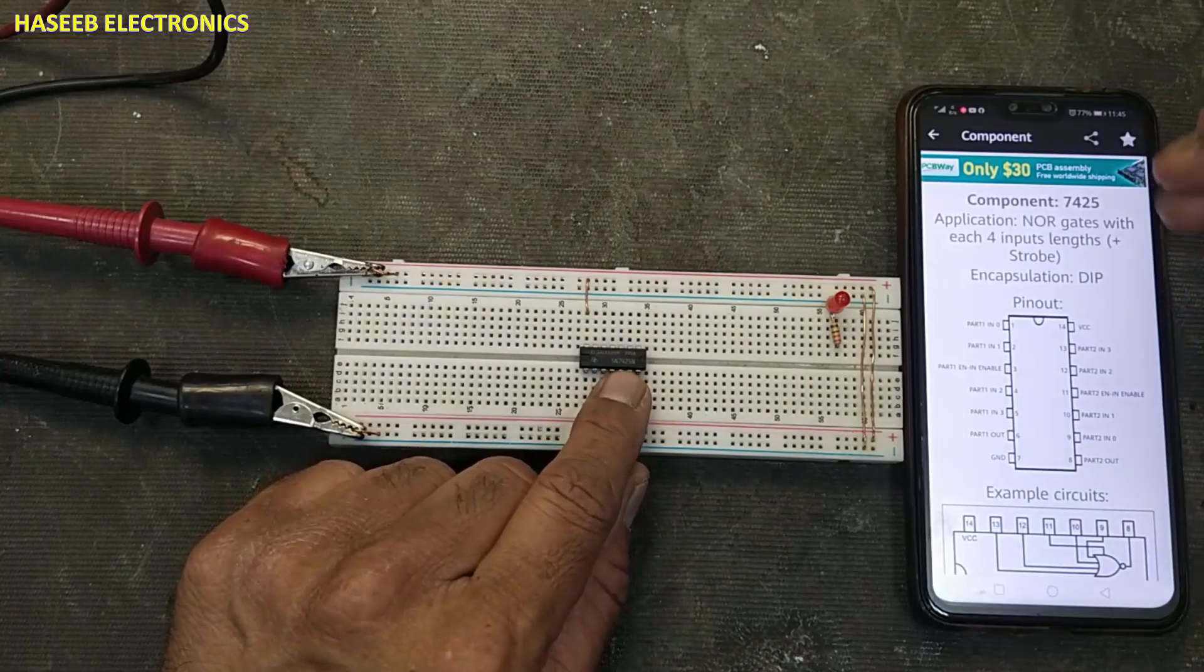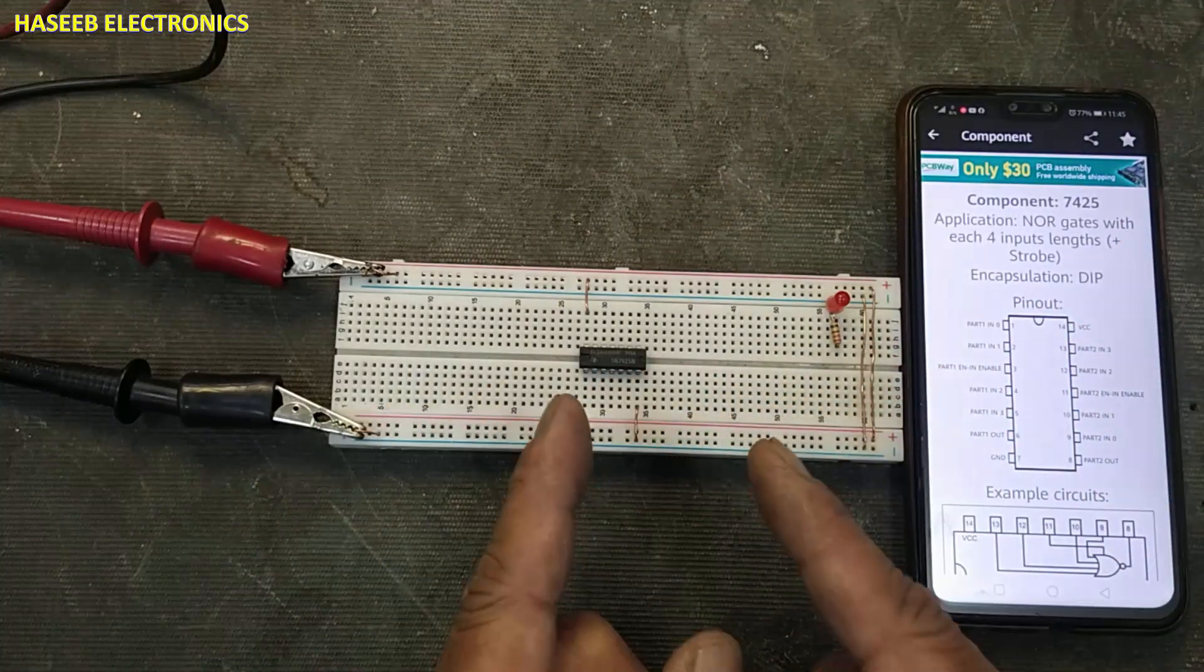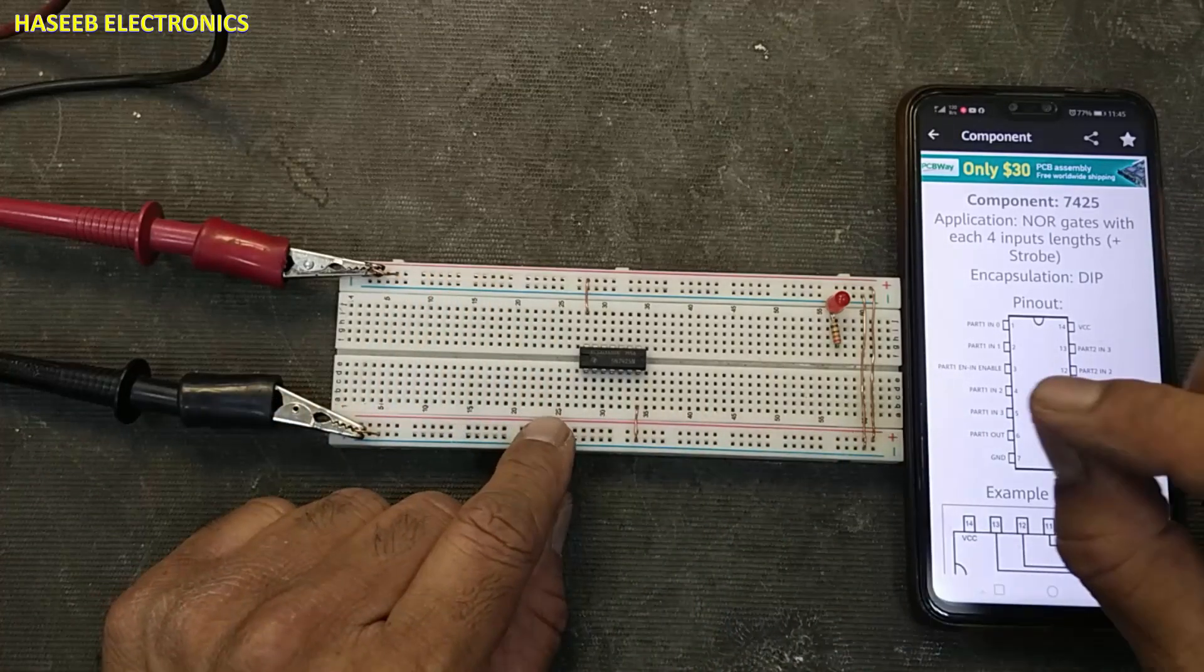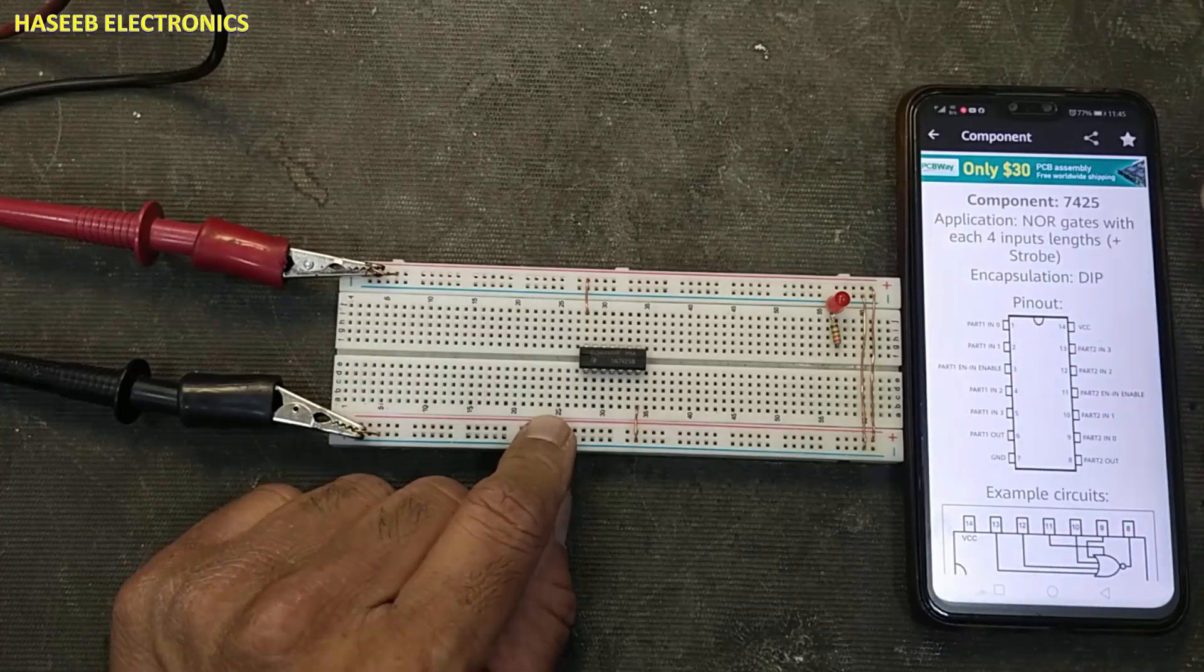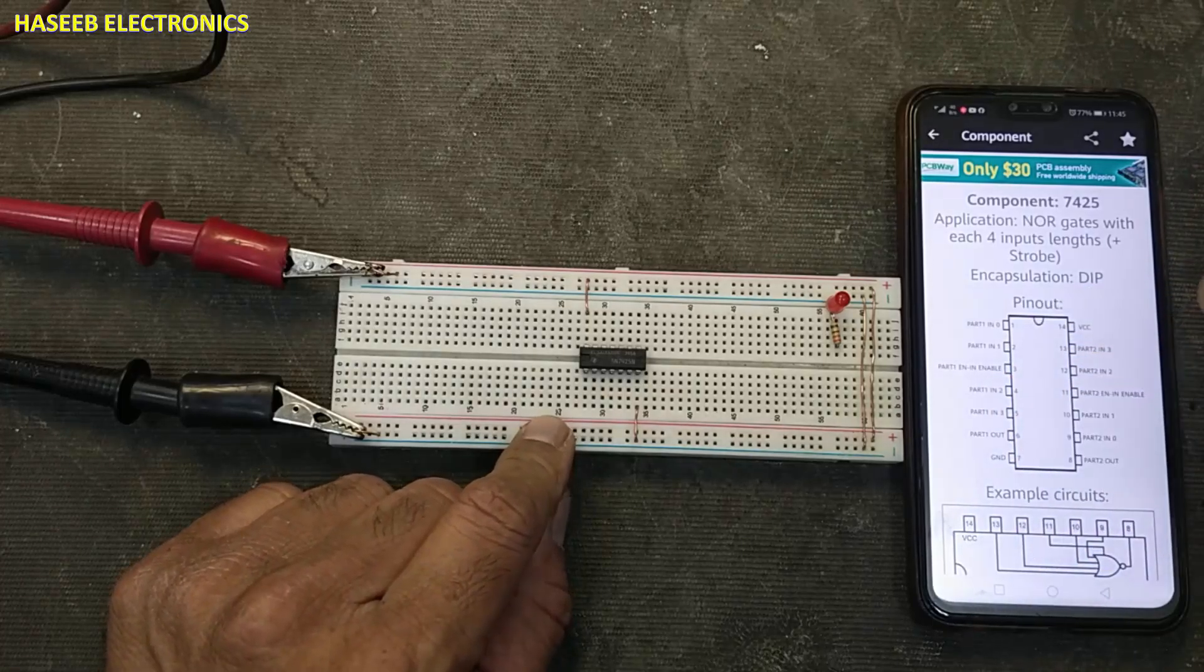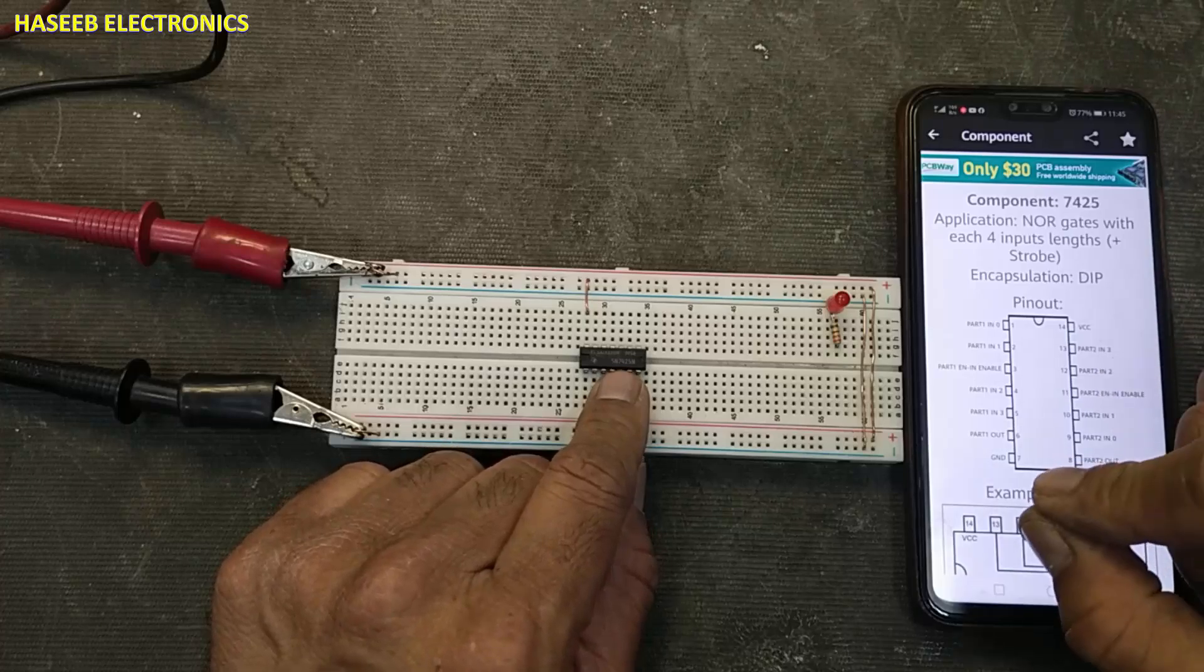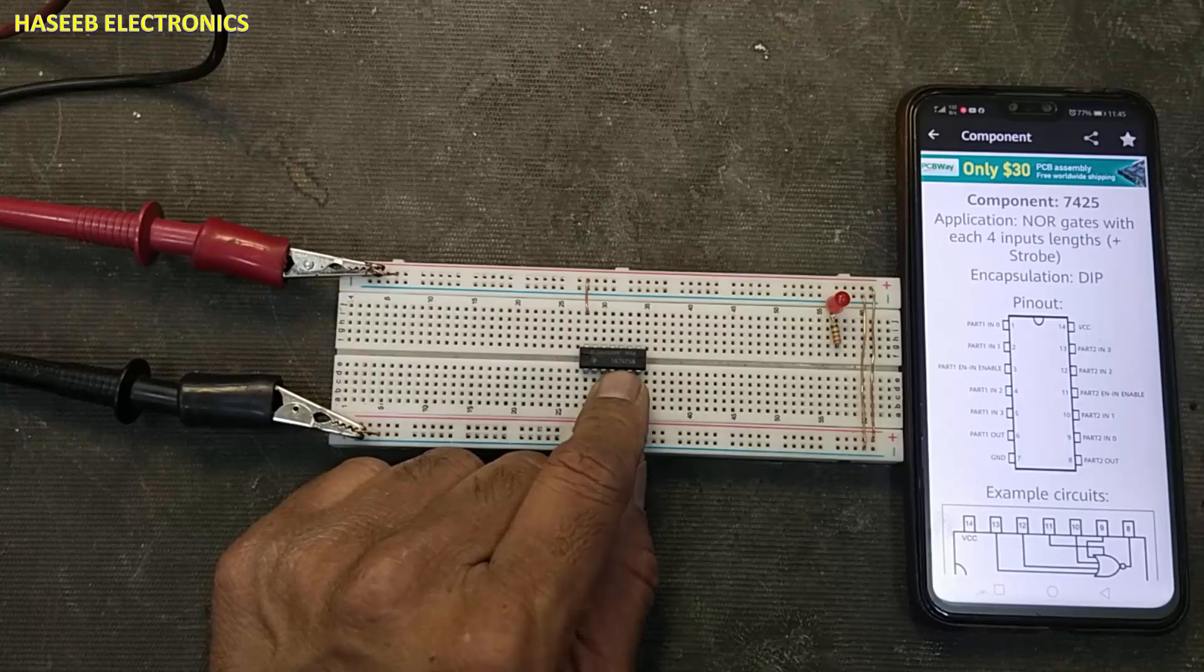Difference in working temperature, frequency and propagation delay. 74 serial works from 0 to 70 degree, that is commercial. 54 serial, that is for military specification and industrial, from minus 55 to 125 degree centigrade.